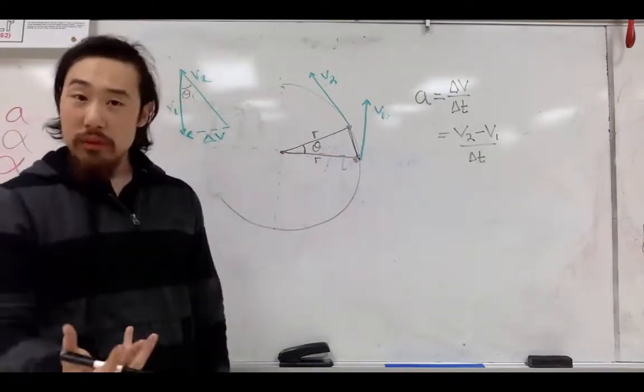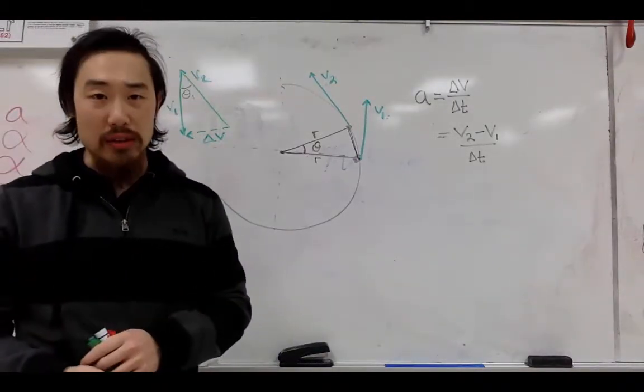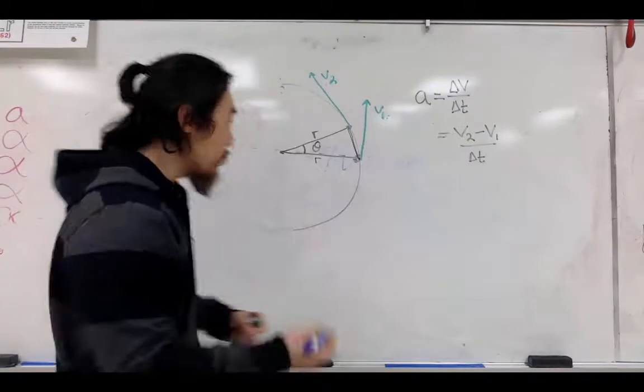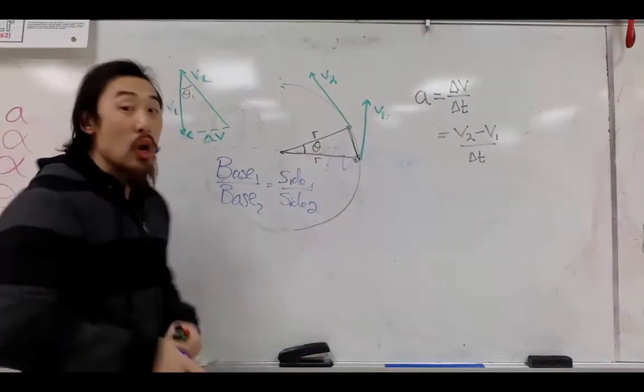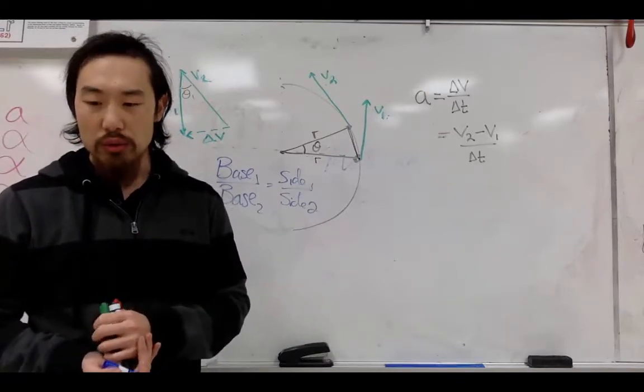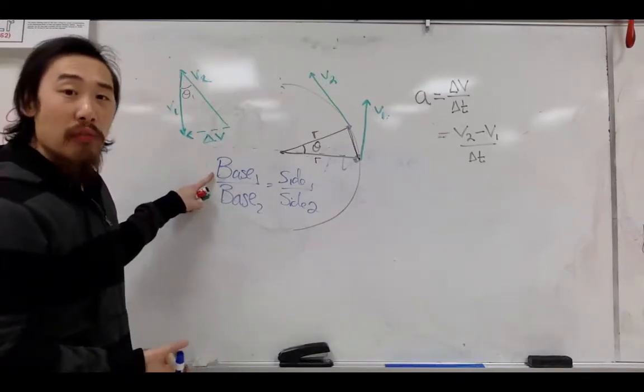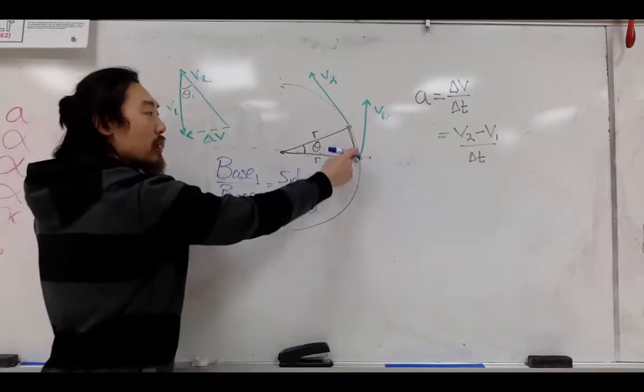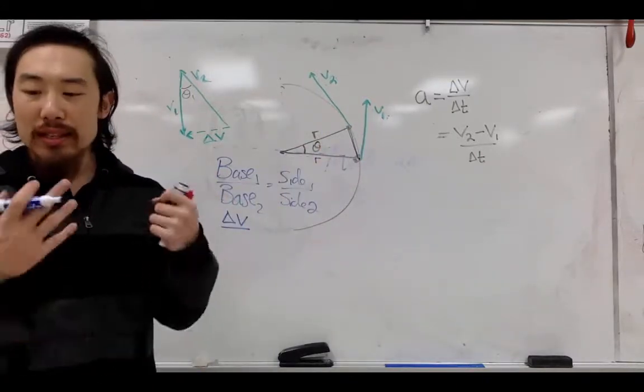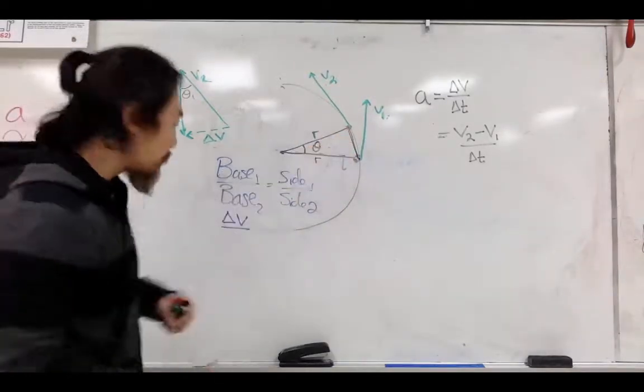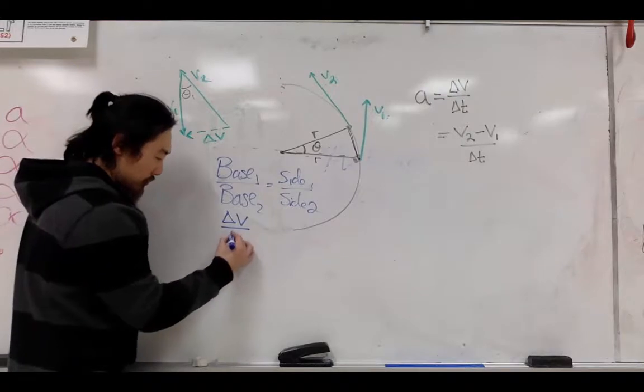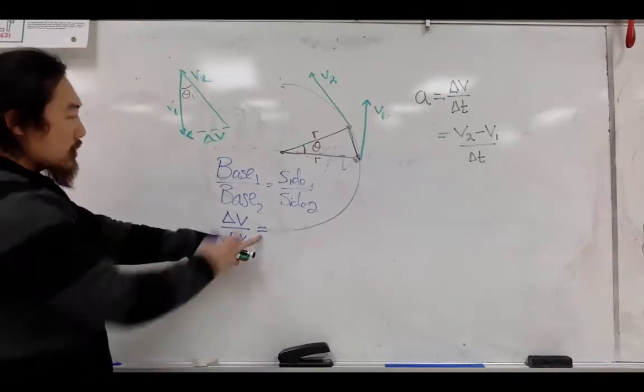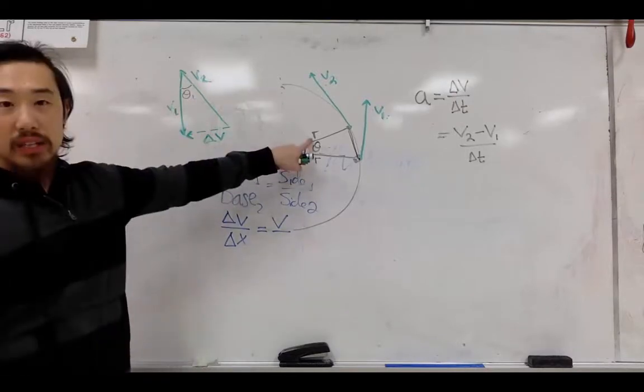So we have a triangle here made with the radii and we have a triangle here made with the change in velocity. Now, we can use our similar triangle theorems. We can say that base one divided by base two is equal to side one divided by side two. So base one, we can write it as delta v or the change in velocity right there. So base two is on the other side or on the other triangle, and that is the change in distance. That's the change in distance from here to here, and we call that delta x or the change in position.